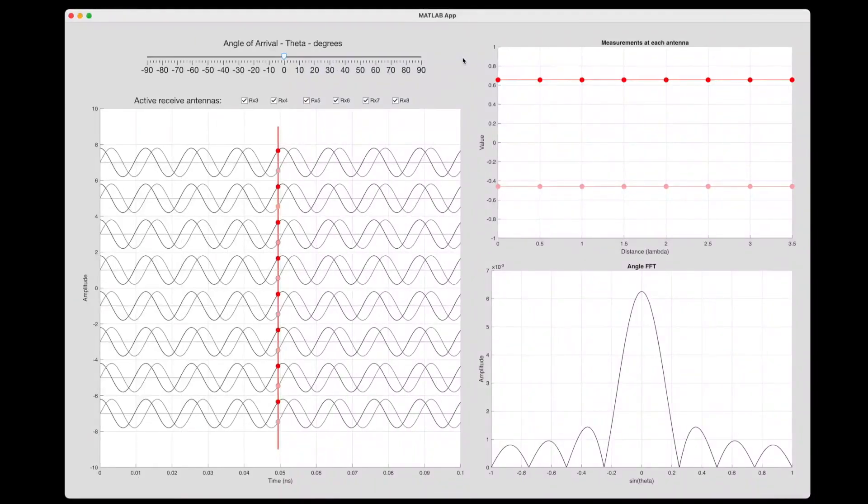Alright, in this example I'm using an array of eight receive antennas. This plot shows the IQ signals from each of them, where the first line is the first antenna, the second, and the third, and so on. And this red line indicates the IQ values that each antenna is seeing at the moment. That's what these red dots are. And this plot up in the corner is just plotting those IQ values over distance. Remember, each antenna is a distance of half a wavelength away, so the whole array is three and a half wavelengths long.